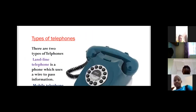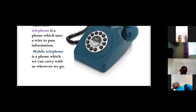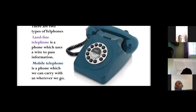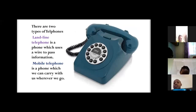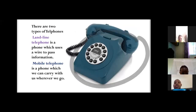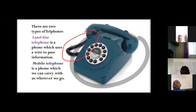Now, types of telephones. We have two types of telephones — we have the landline and the mobile telephone. The landline telephone uses a wire. You can see right here — this is a landline telephone, and you can see the wire. It's a phone which uses a wire to pass information. Landline phones are mainly used in offices, and they were plentiful before the discovery of mobile phones.